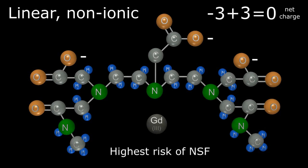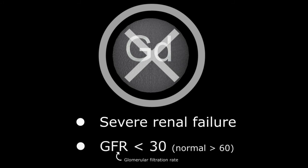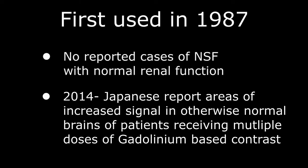The risk of NSF has been essentially eliminated because we screen patients for renal failure prior to gadolinium administration. Currently, we no longer give gadolinium contrast agents to patients with severe renal failure defined as a GFR less than 30. However, while gadolinium chelates have been used for decades as an MRI contrast agent with no reported cases of NSF in patients with normal renal function, reports out of Japan in 2014 described areas of increased T1 signal within the brain of otherwise normal patients who had undergone multiple contrast enhanced MRI scans in the past.